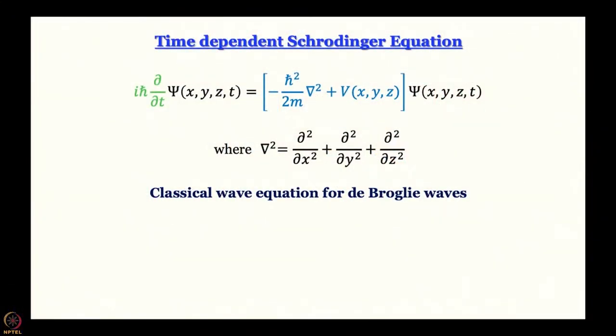So far, what we have is the time-independent Schrödinger equation, which is essentially the classical wave equation for de Broglie waves. On the left-hand side we have the operator which is time dependent, and on the right-hand side we have the Hamiltonian operator, which is time-independent and space-dependent. We have abbreviated ∂²/∂x² + ∂²/∂y² + ∂²/∂z² by the Laplacian del-squared.